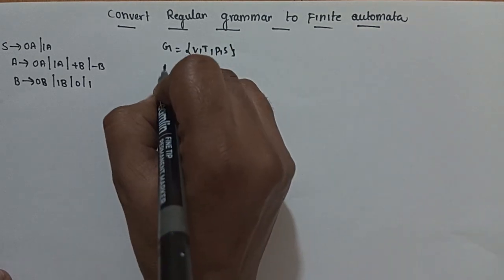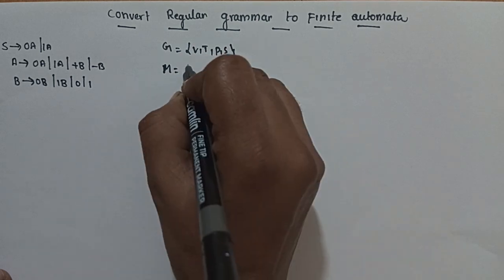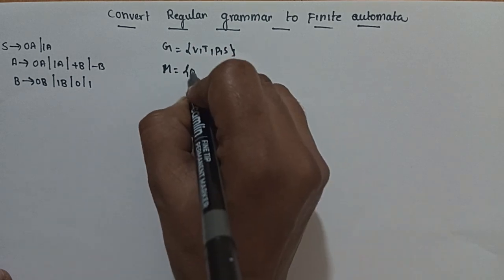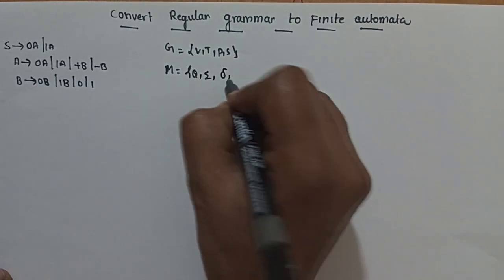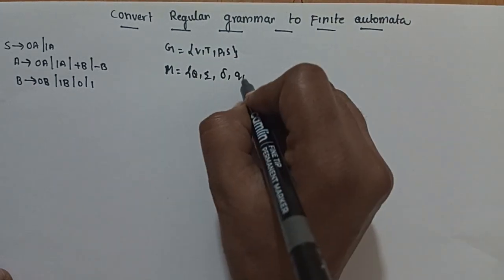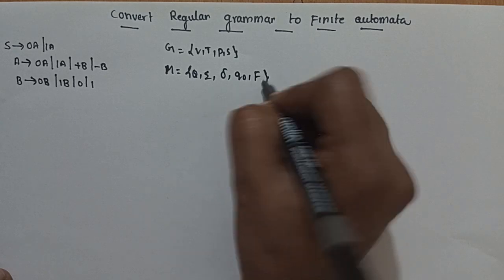Finite state machine is a five-tuple: Q, sigma, delta, Q0, F.